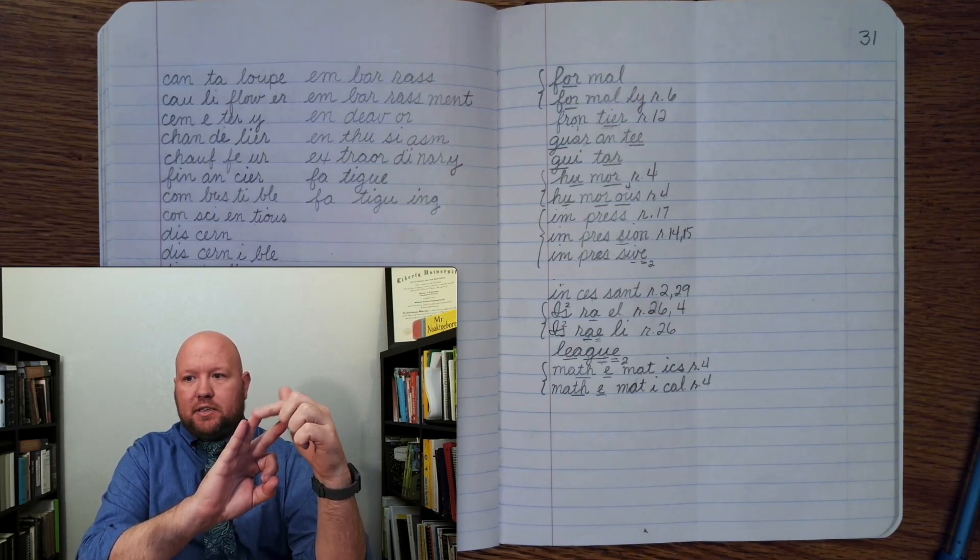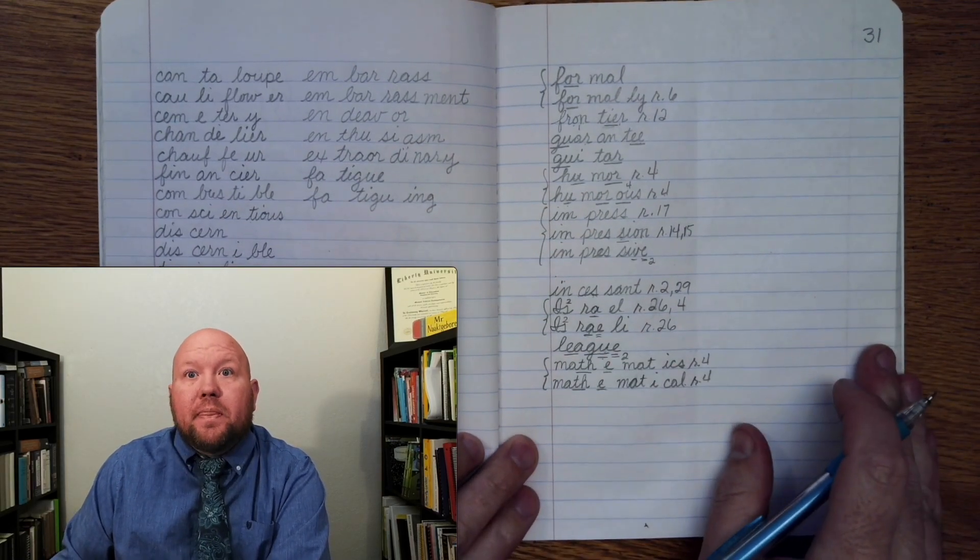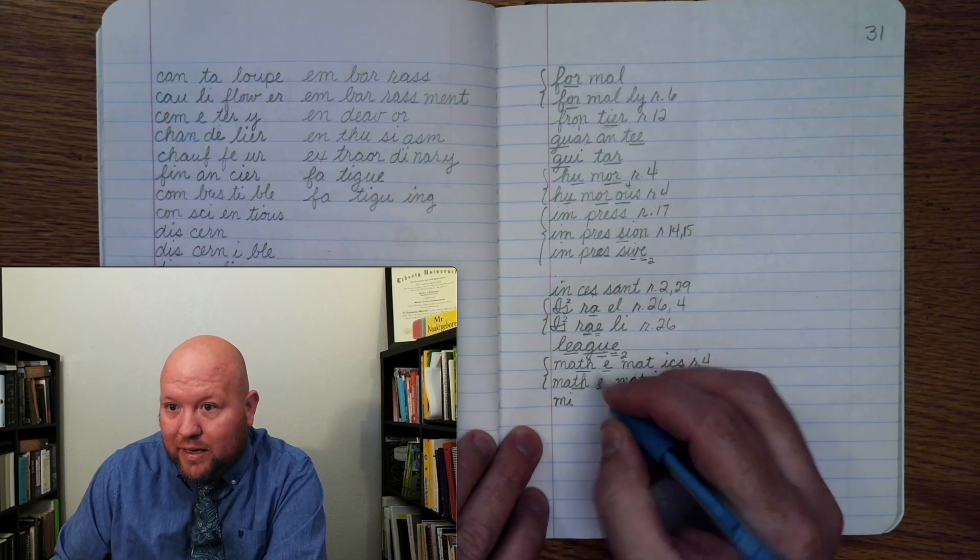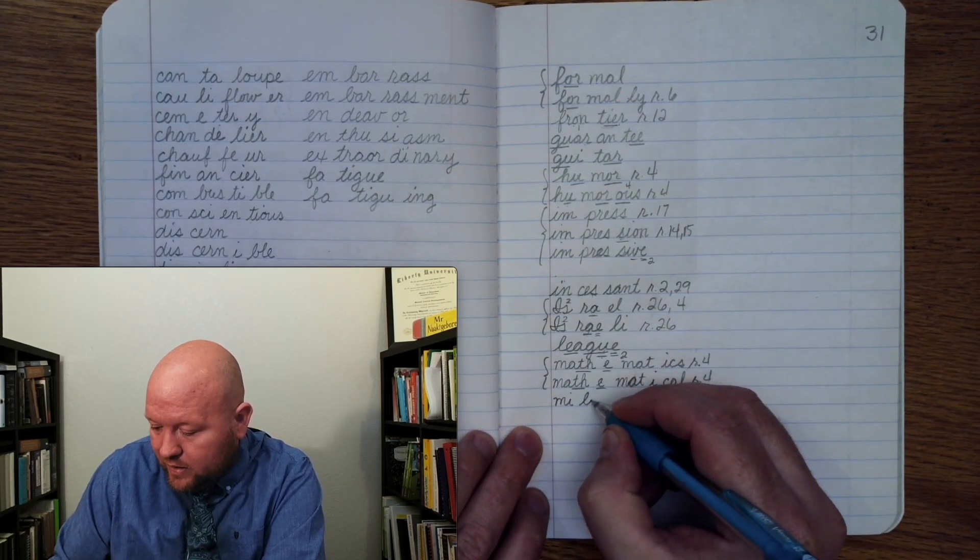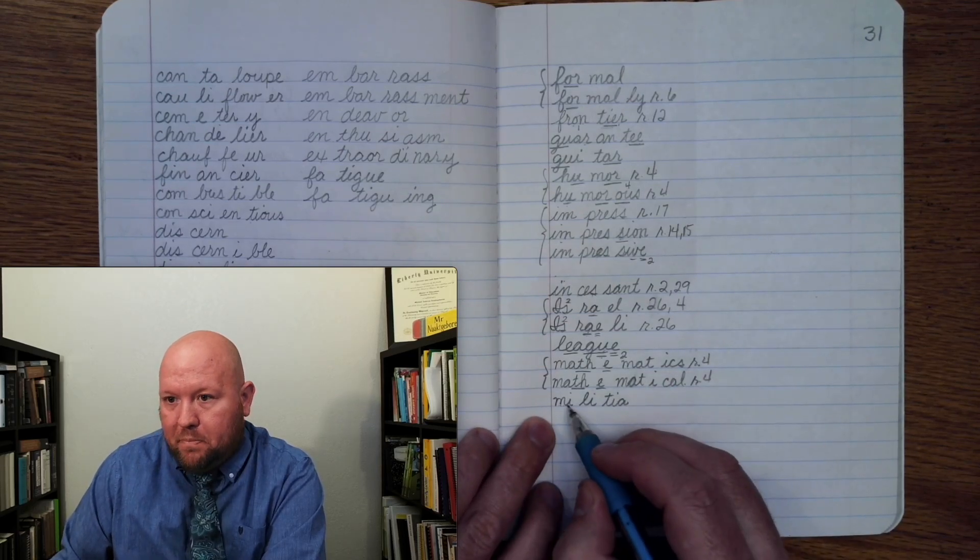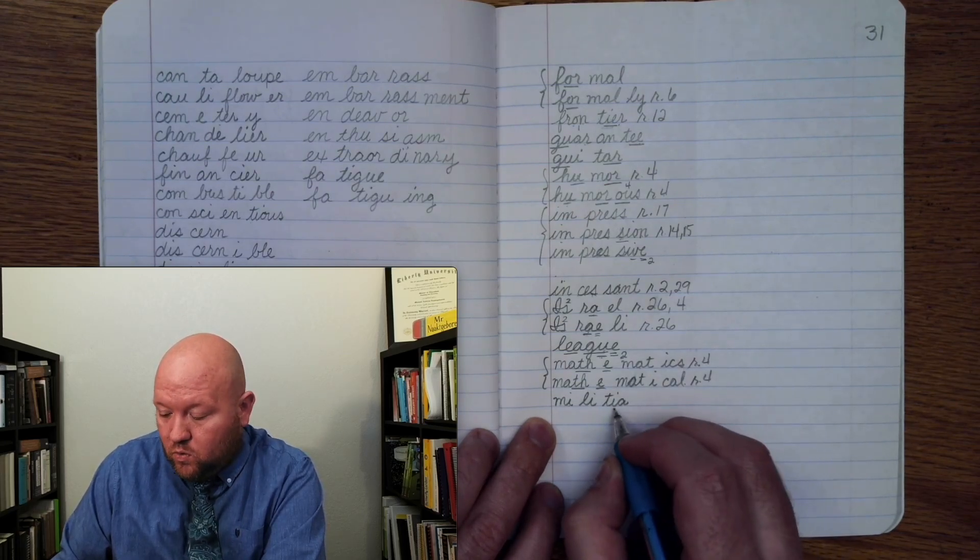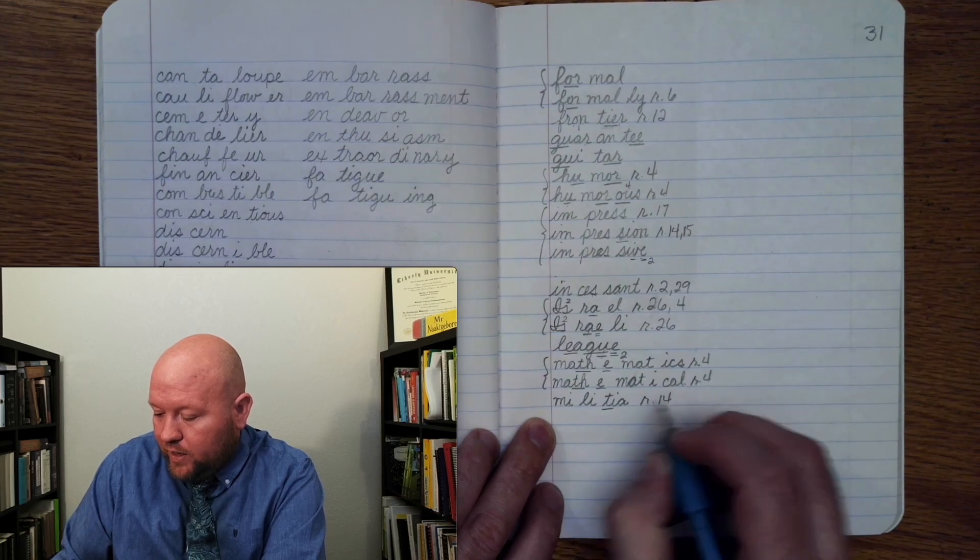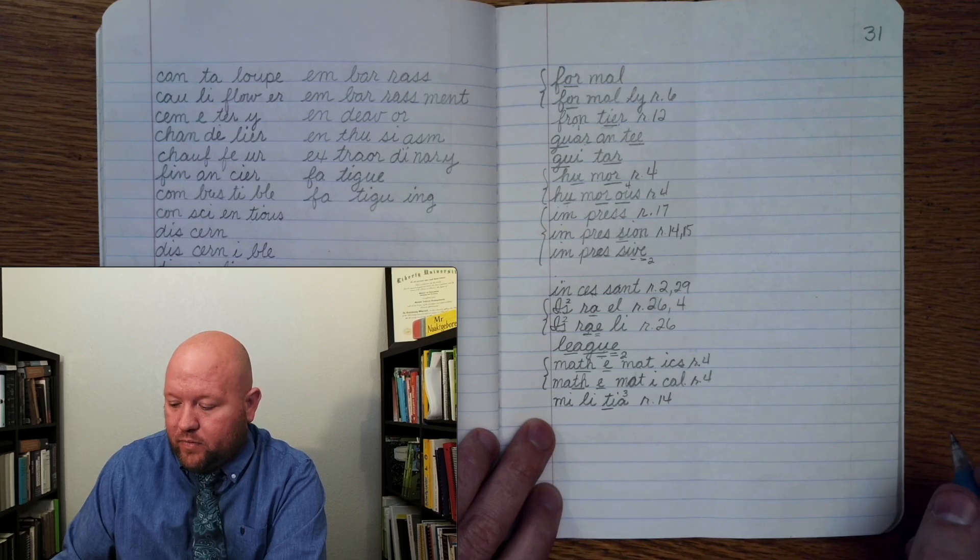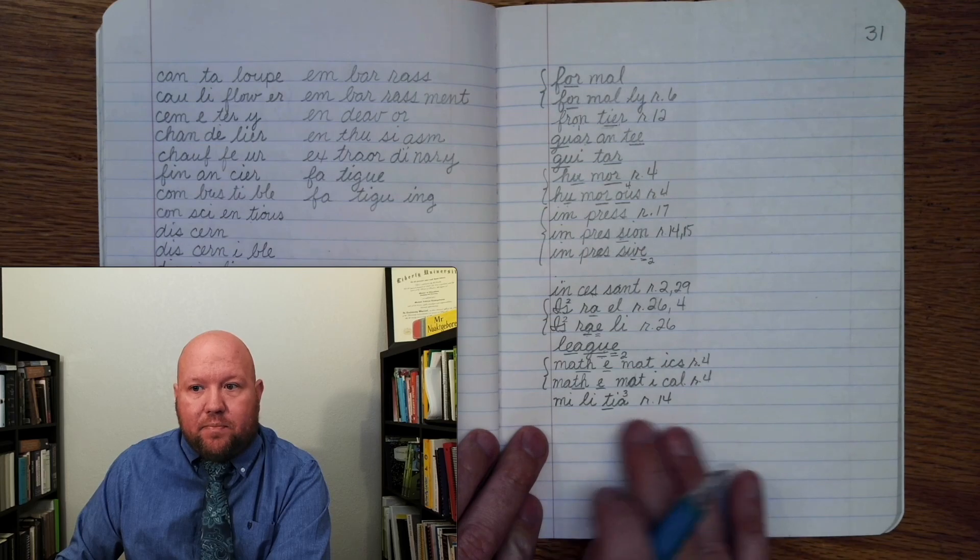Militia. Militia. Militia. Here, I'm using a T-I to make that CH sound. Militia. Militia. Militia. Militia. Militia. Once, rule 14, a three. Militia. Militia. Militia. Now, a militia has to do with the military.